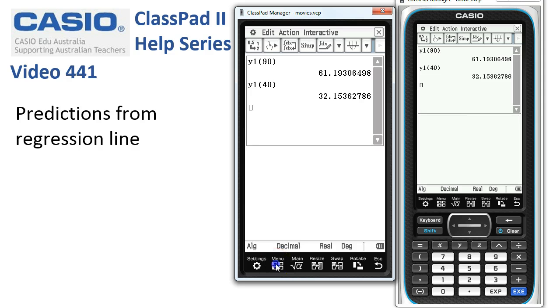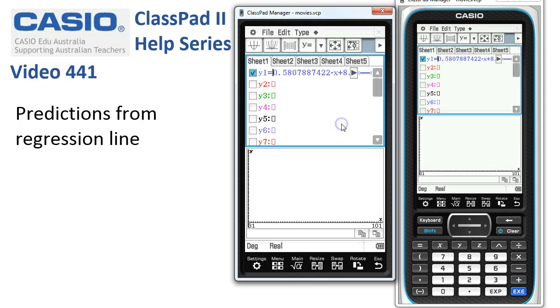Let's just check. If I tap off to menu here and look at Graph and Table, you can see here is the regression line stored into Graph and Table. So I'm just using that back in main.